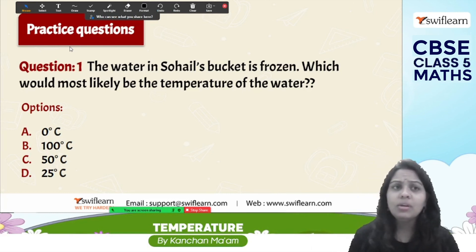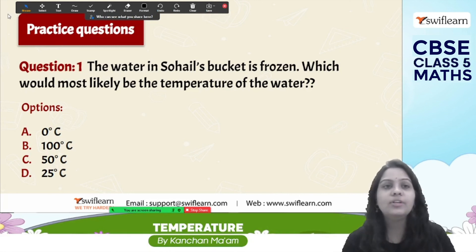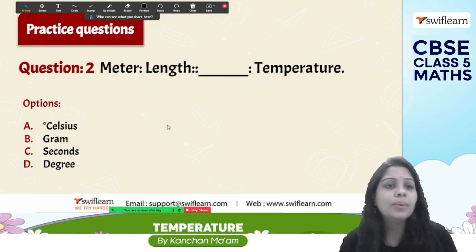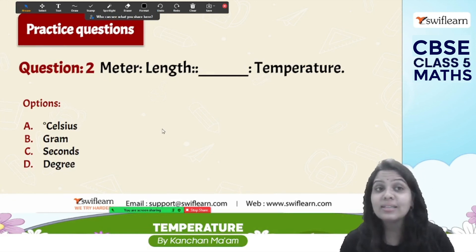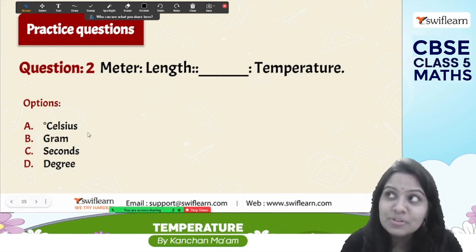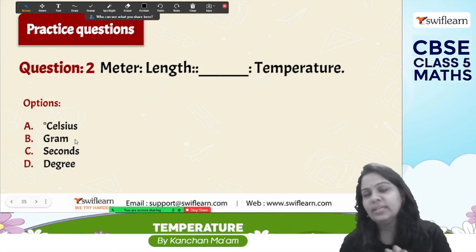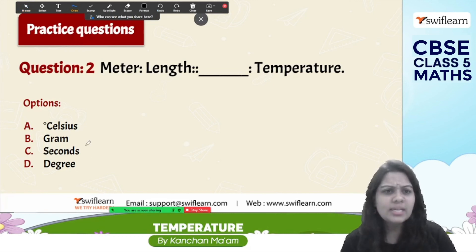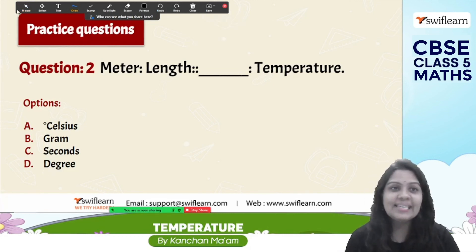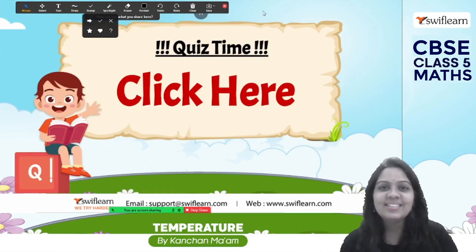Just as we use meters to measure length, we use degrees to measure temperature. We measure temperature in degrees Celsius. Grams are for mass, seconds are for time, and degrees are for temperature — though the word 'degree' is also used for angles.